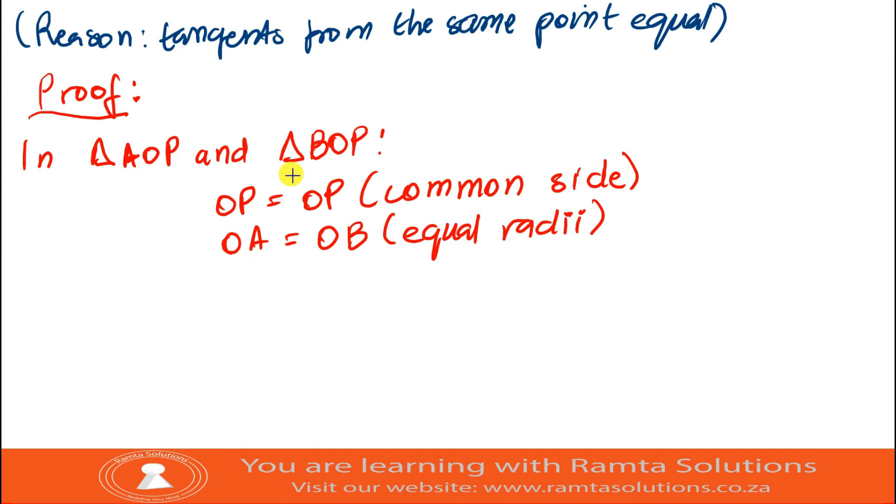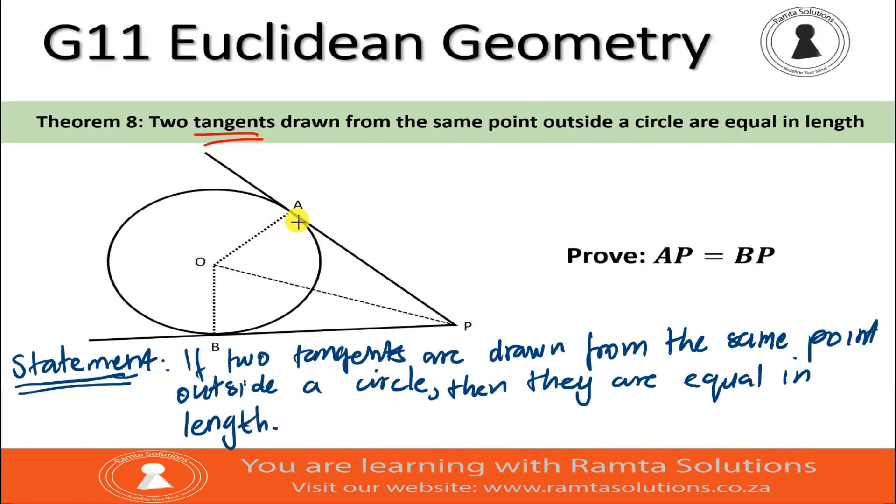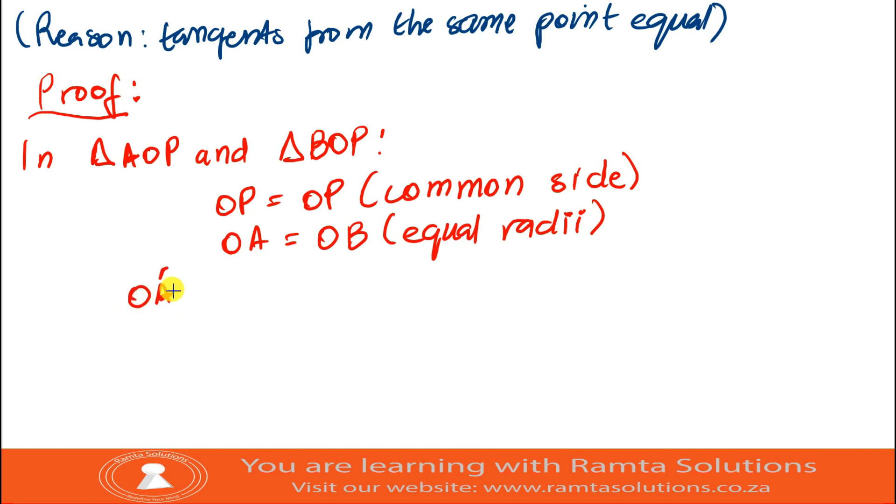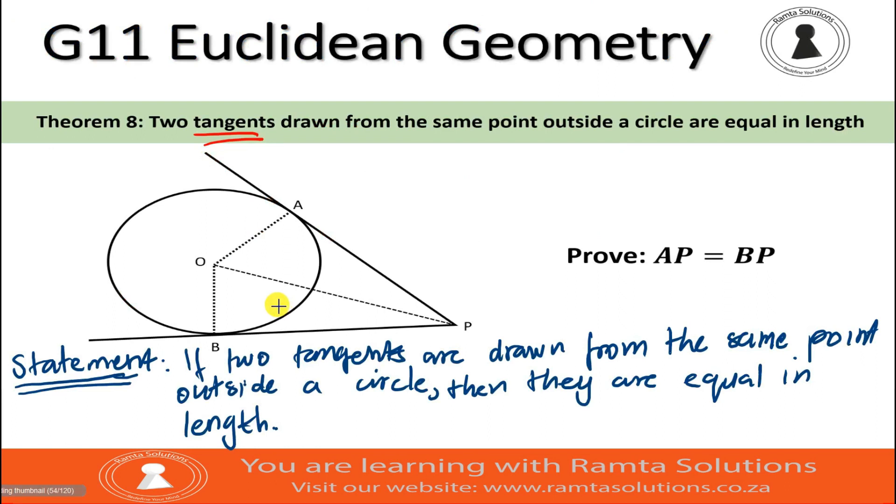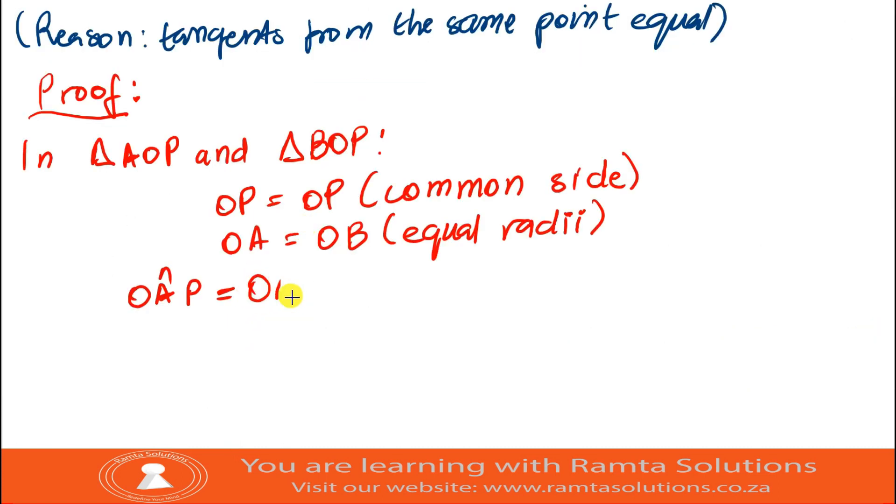Now, there is something that you know about the angle here, the angle between the tangent and the radius. You know that tangent is perpendicular to radius. So, if tangent is perpendicular to radius, that means there is a 90 degrees. In other words, angle OAP is 90 degrees. In the same way, angle OBP is also equal to 90 degrees. So, angle OAP is equal to angle OBP. They are equal to 90 degrees. What is the reason? Tangent is perpendicular to radius.